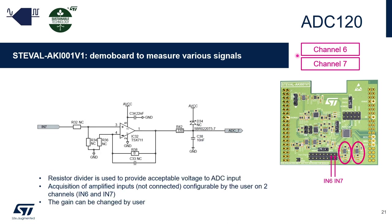Channel 6 and channel 7 are used for custom configurable filters. They have a resistor divider to provide an acceptable voltage range to the ADC input, and an operational amplifier where you can set the gain. The two inputs are located on this connector. Be careful: all the resistors are not connected by default on the EVAL board, so you cannot use it directly without configuring it first for your own application.